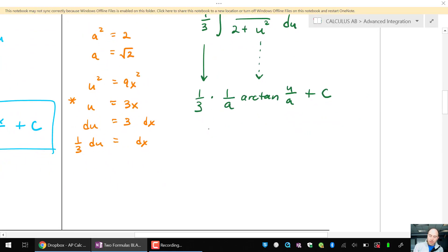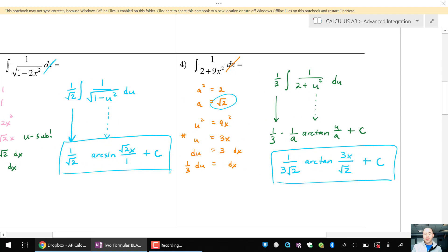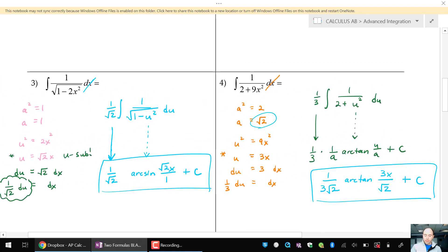Alright, let's finish the problem here. I have 1 third times 1 over a. a is root 2. So 1 over 3 root 2 times arctangent of 3x over root 2. And then a big plus c, the constant of integration at the end. So we can see how these formulas can get more complicated and can be a little bit tricky if we miss that u sub piece.